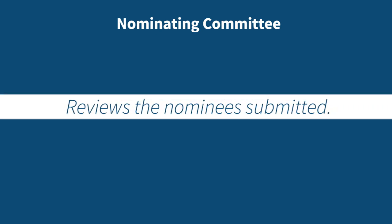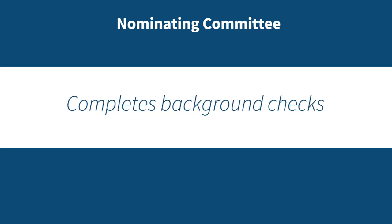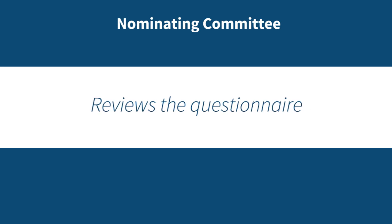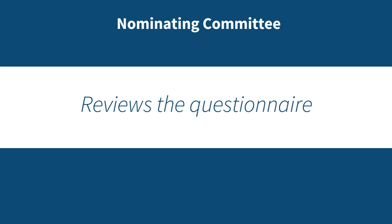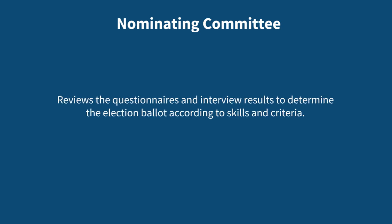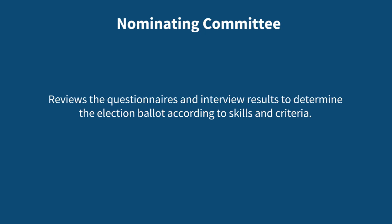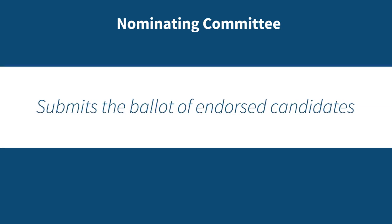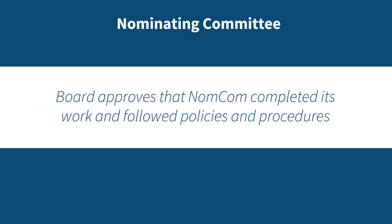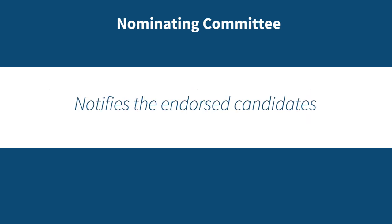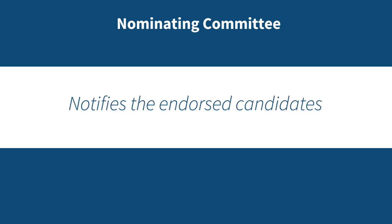The nominating committee will publicly post the call for nominations. Then NomCom will review the nominees submitted, complete background checks, conduct interviews with all nominees, and review the questionnaire that each nominee submits based on their experience, strategic thinking, core competencies, and similar criteria. NomCom will assess those results and determine the election ballot based on the mix of skills they think are needed for the next year. Then the Nominating Committee will submit the ballot of endorsed candidates to the board for approval, and once board approval is obtained, will notify the endorsed candidates that they've made the slate.